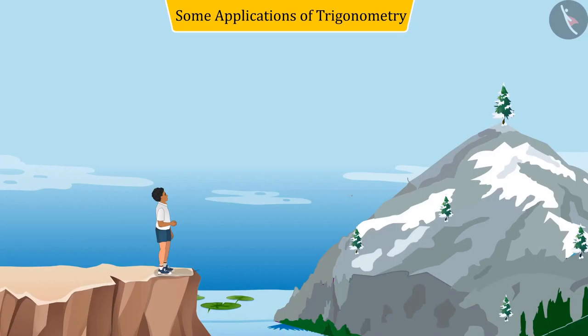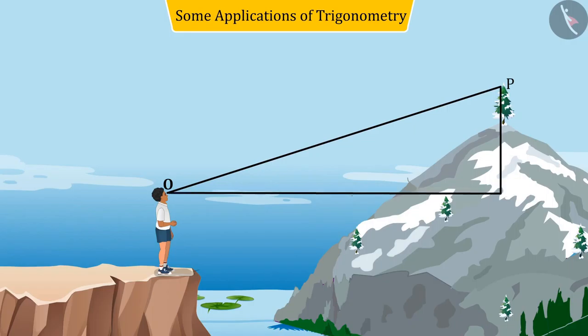When a person sees the top point P of an object from his point of view, i.e. point O, the line OP joining these two points is called the line of sight.